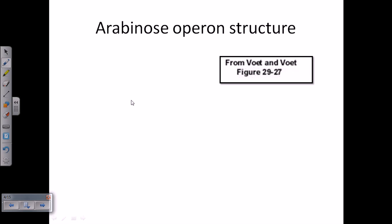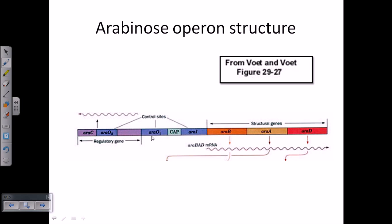Let's look at the gene structure of the Arabinose Operon. Like any other operon, it consists of a promoter region, an operator, repressor or activator elements, and structural genes. The structural genes are araB, araA, and araD. These three structural genes will produce certain enzymes that will help you break down arabinose.